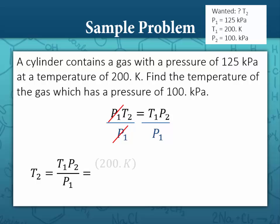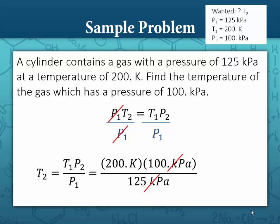T1 is 200 Kelvin, P2 is 100 kilopascals all over P1, which is 125 kilopascals. The unit's kilopascals cancels out, and we have a new temperature of 160 Kelvin.